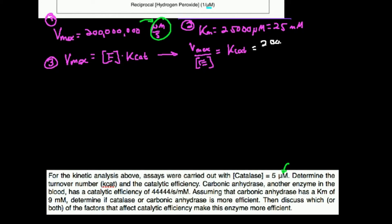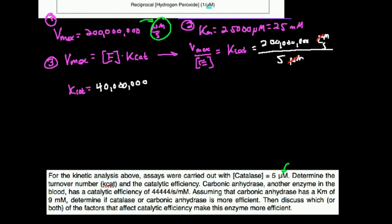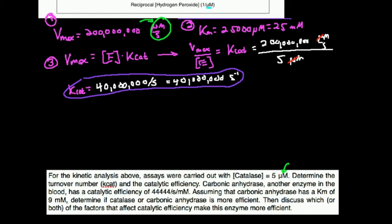We already have the Vmax and enzyme concentration in appropriate units. The Vmax is 200 million micromolar per second, and we divide by the total enzyme concentration of 5 micromolar. The micromolar units cancel — that's why we want them to be the same units — and we get kcat in units of per second. If you take 200 million divided by 5, you get a kcat of 40 million per second (or 40 million s⁻¹). That's our answer.